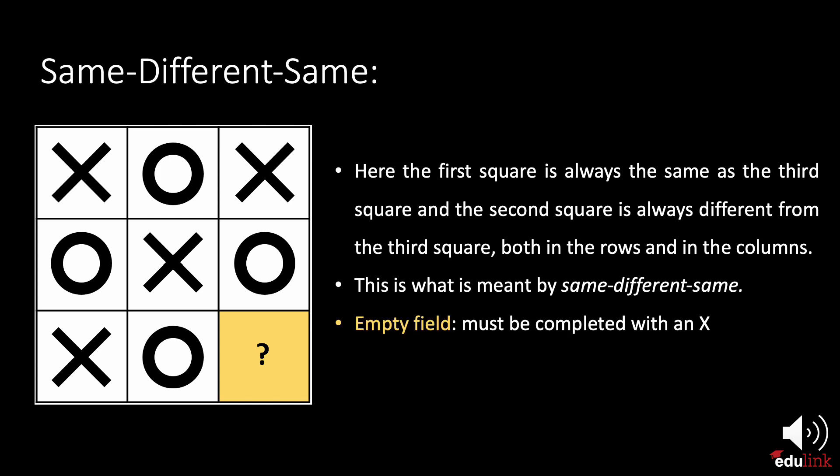The previous example demonstrated how patterns can be all the same or all different. Now, let's look at how patterns can follow a same-different-same form. Can you predict what goes in the blank space? In this example, the first field is always the same as the third field, and the second field is always different from the third field, both in the rows and in the columns. That is what is meant by same-different-same. The empty cell should have the same shape as the first cell in that row or column, an X.